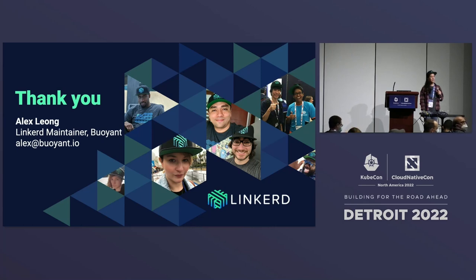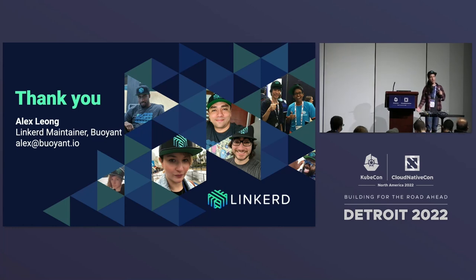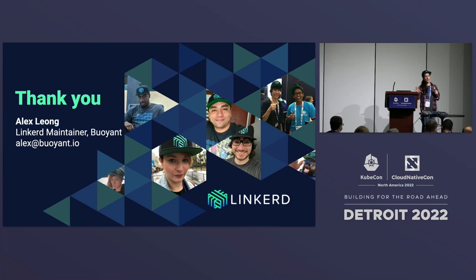Q: I'm a long-time Istio user but a fan of Linkerd personally. In terms of day-two operations and visibility, Istio makes it easy to use something like Kiali. Is there something equivalent in the Linkerd community? A: A lot of that is built into the Linkerd viz extension. If you use the Linkerd viz extension, you can get things like service maps and dashboards. A lot of the functionality in Kiali is also available through the Linkerd dashboard. On top of that, all of that data is in Prometheus, and you can build any visualization you want on top of that.